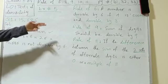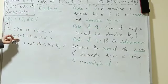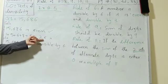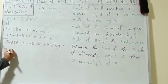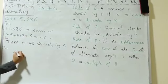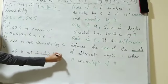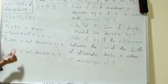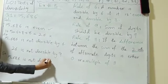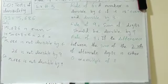Now let's check the same number for divisibility by 9. The rule for 9 is the same as for 3: the sum of the digits should be divisible by 9. We already found the sum is 26. Since 26 is not divisible by 9, we can write that 15,686 is not divisible by 9.